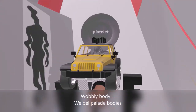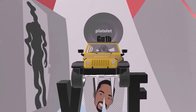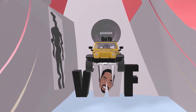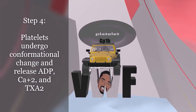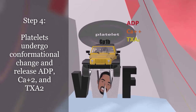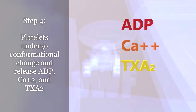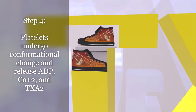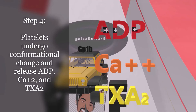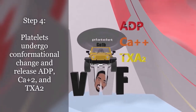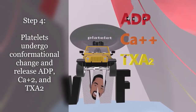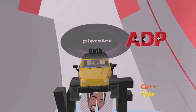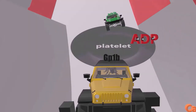Now that the platelets have bound through their GP1B receptor, the platelets undergo a conformational change. The next thing that happens is that the platelets release ADP, calcium, and thromboxane A2 — represented by an AD sign for ADP and a trombone with an A shoe for thromboxane A2. We'll focus on ADP because ADP induces platelets to express another molecule: GP2B3A.